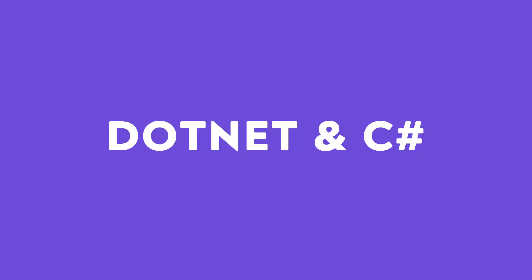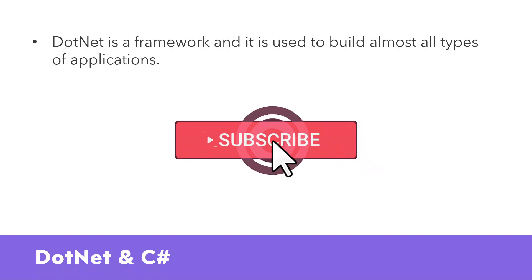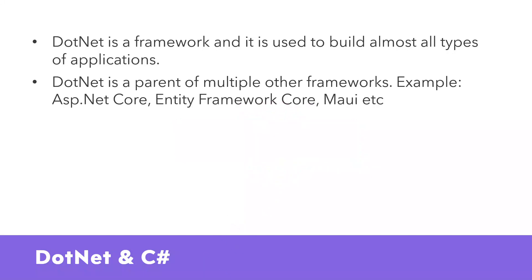I keep learning about C# but also talking about .NET — so what is the relation between .NET and C#? .NET is a framework used to build almost all types of applications: Windows applications, console applications, web applications, and mobile applications. .NET is a parent of multiple other frameworks, for example ASP.NET Core, Entity Framework Core, MAUI, etc. Under .NET there are many frameworks specific to each problem. If I want to deal with web applications I use ASP.NET Core. Entity Framework Core is used to deal with databases. All of them use the .NET framework as the parent.